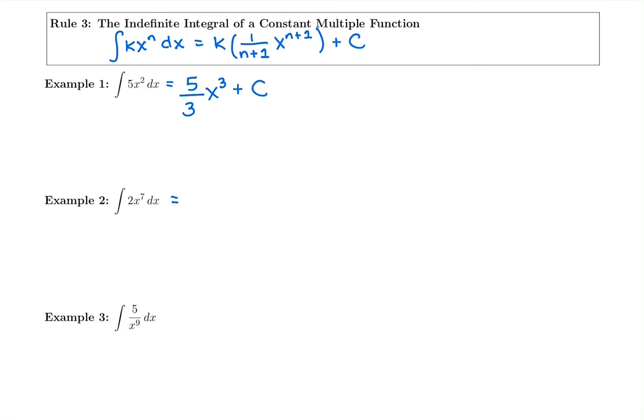Same thing again. If you have a constant multiple 2, you're just going to keep it. Anti-derivative means add 1. So 7 plus 1 is 8. So I'd have 2 over 8, x to the 8, plus C.